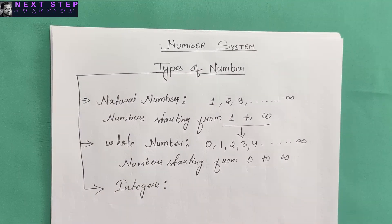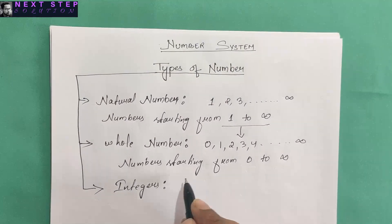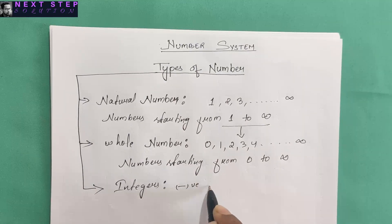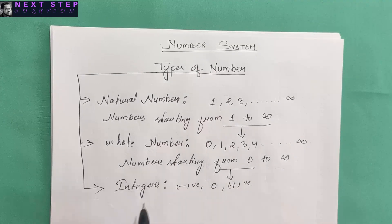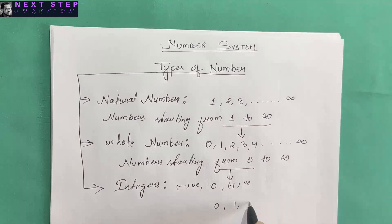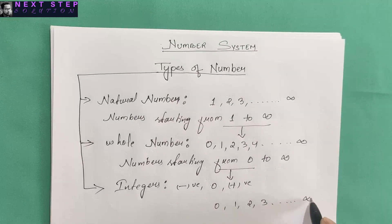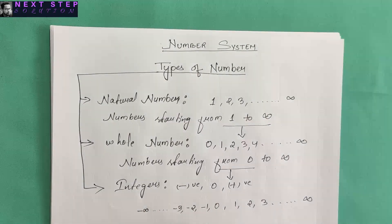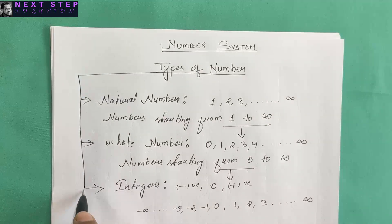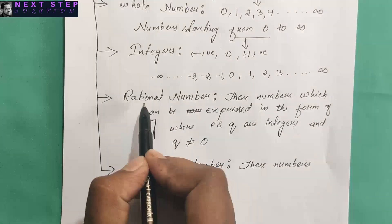After whole numbers, the next is integers. Integers include negative numbers, zero, and positive numbers. So integers can be written as zero, one, two, three going to positive infinity, and also minus one, minus two, minus three going to minus infinity.